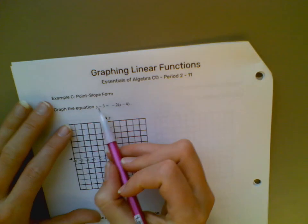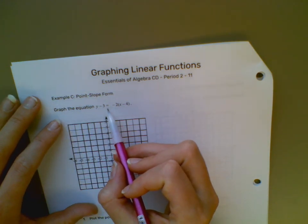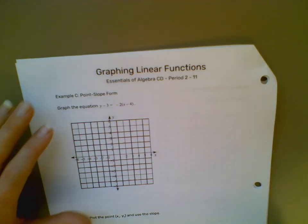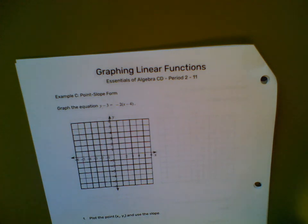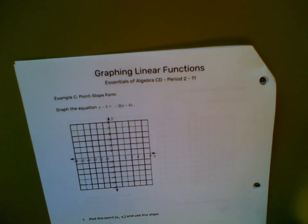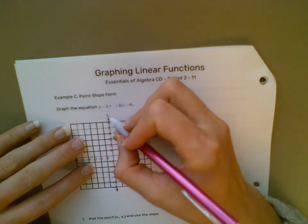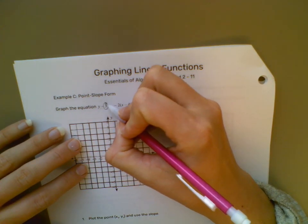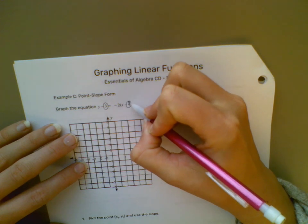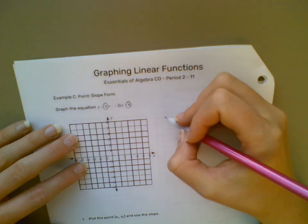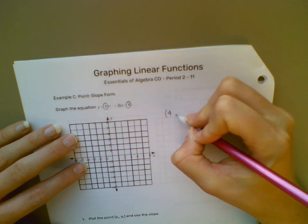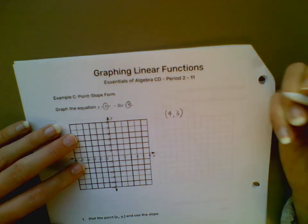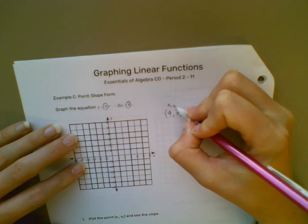We have Y minus 3 equals negative 2 times X minus 4. So let us find our point and then find the slope. We have Y1 and X1. So that point is going to be 4, 3—X1, Y1.